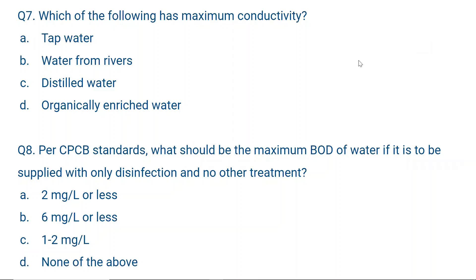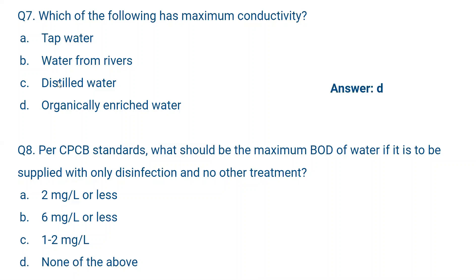Question number seven: Which of the following has maximum conductivity? Options: A — tap water, B — water from rivers, C — distilled water, D — organically enriched water. Any water with maximum contamination will have maximum conductivity, because more solids means more ions. Distilled water has no ions, tap water and river water have fewer ions, but organically enriched water has more ions and higher conductivity. The answer is D.